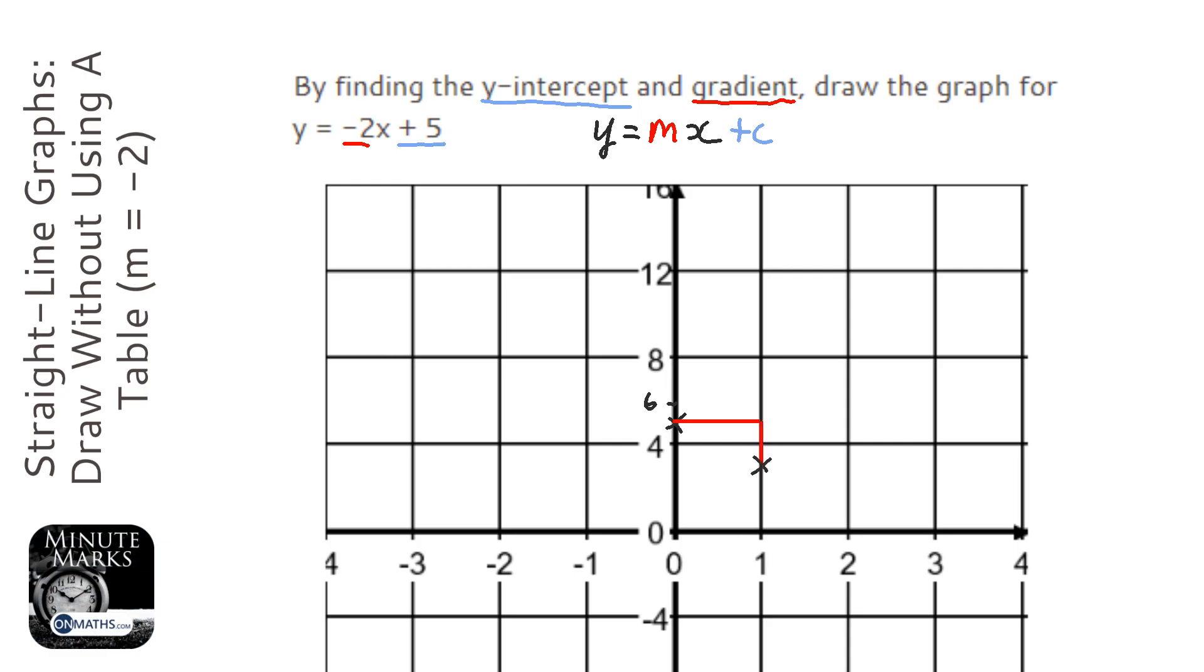So 2, 3 actually, not about 3. I'm going to do it again. So 1 to the right and 2 down. And there we go.